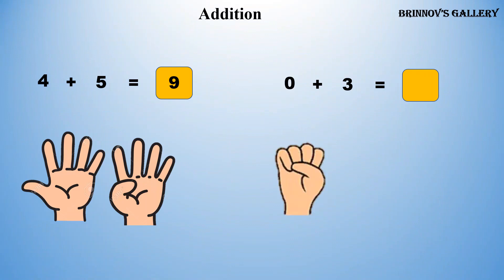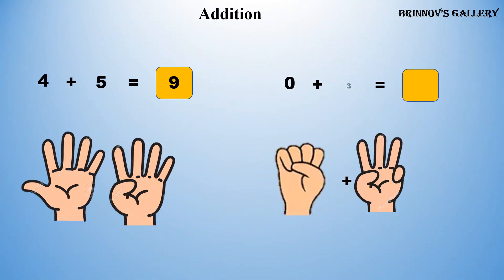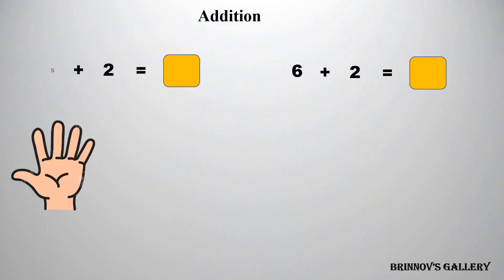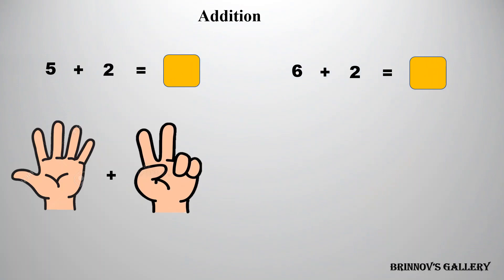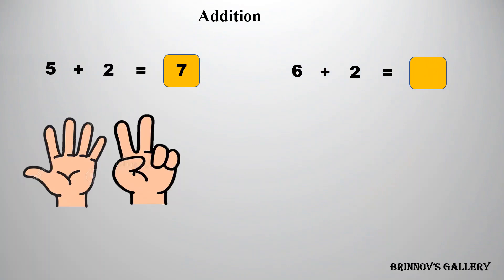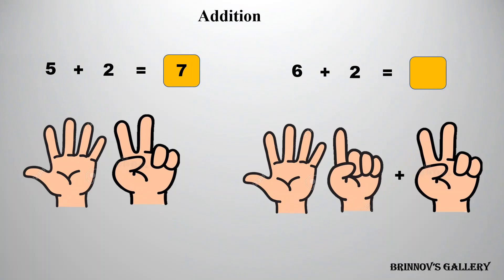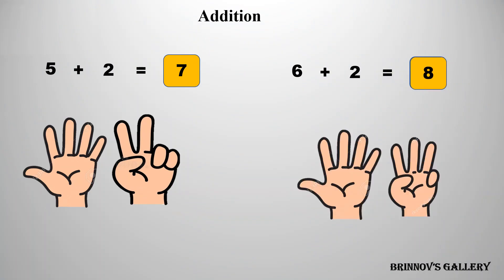0 plus 3 is equal to 3. 5 plus 2 is equal to 7. 6 plus 2 is equal to 8.